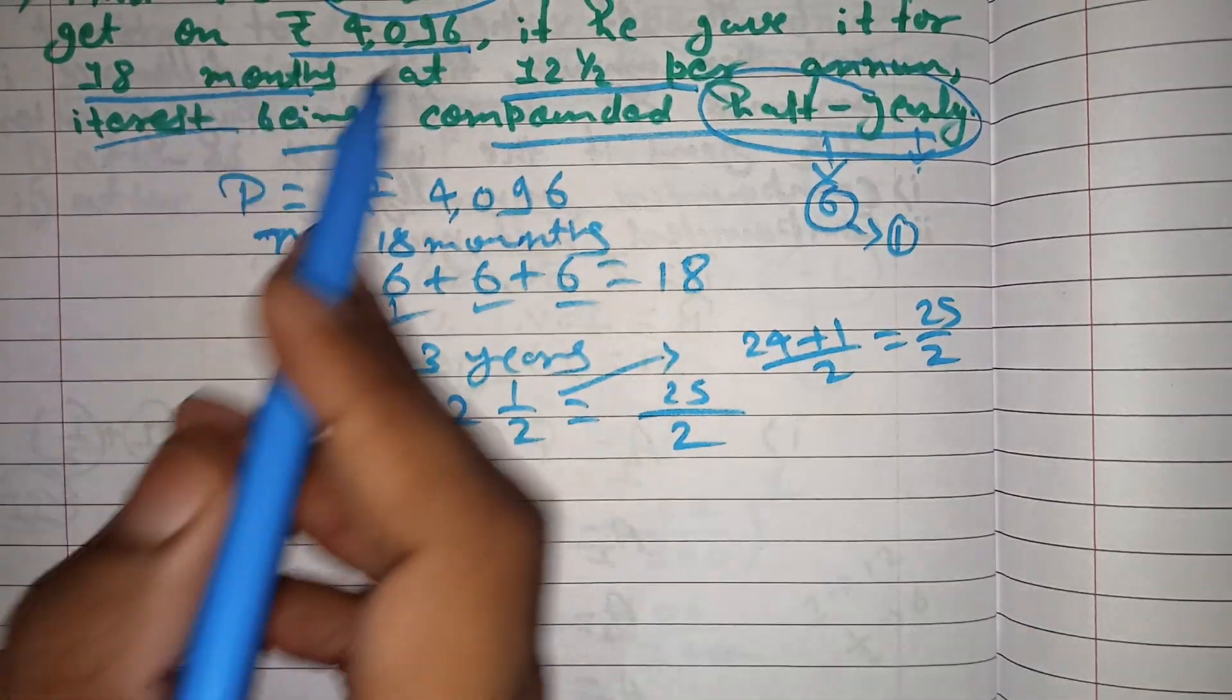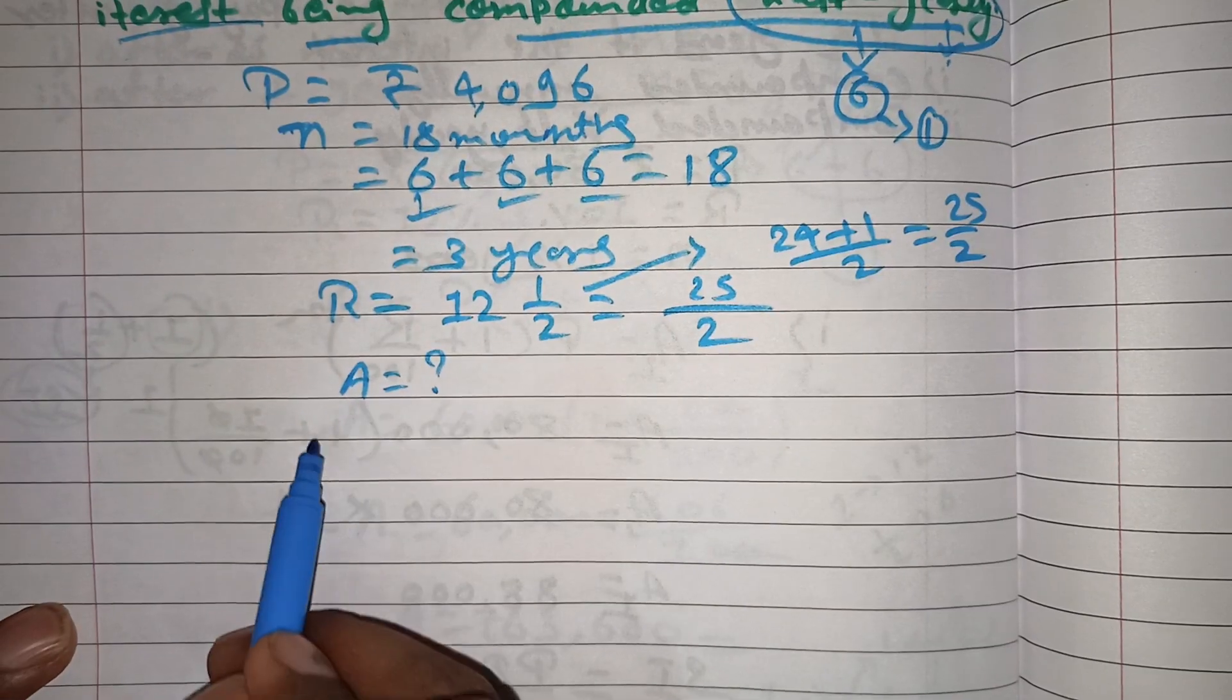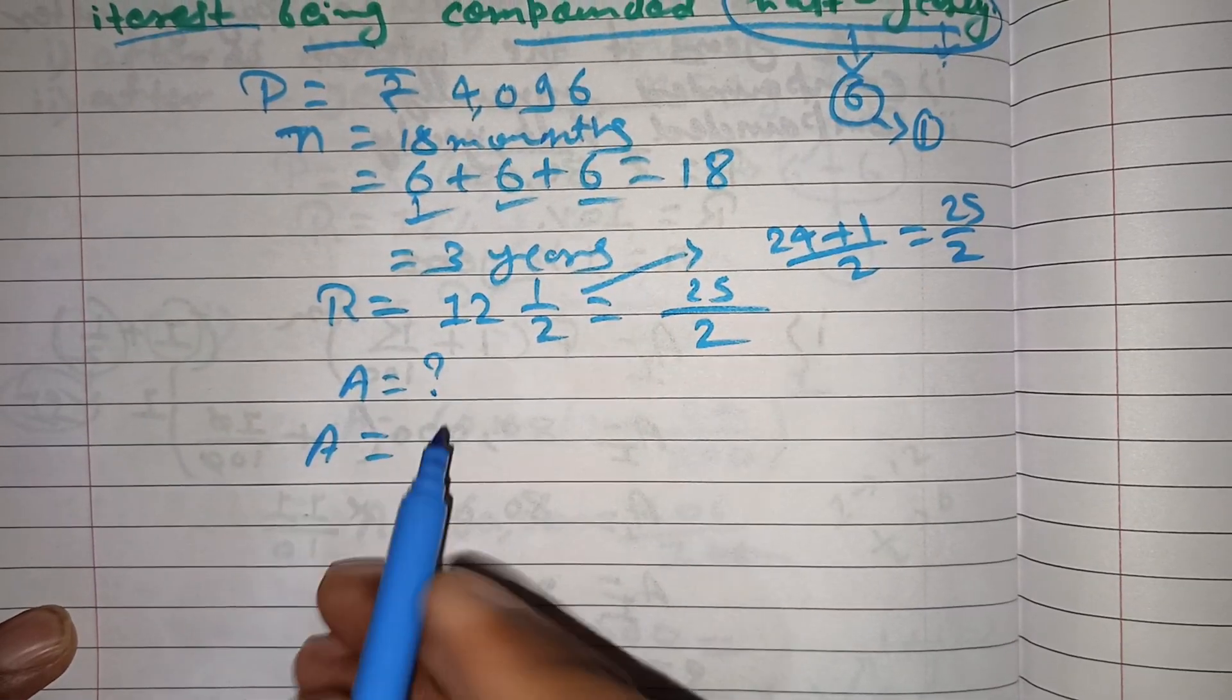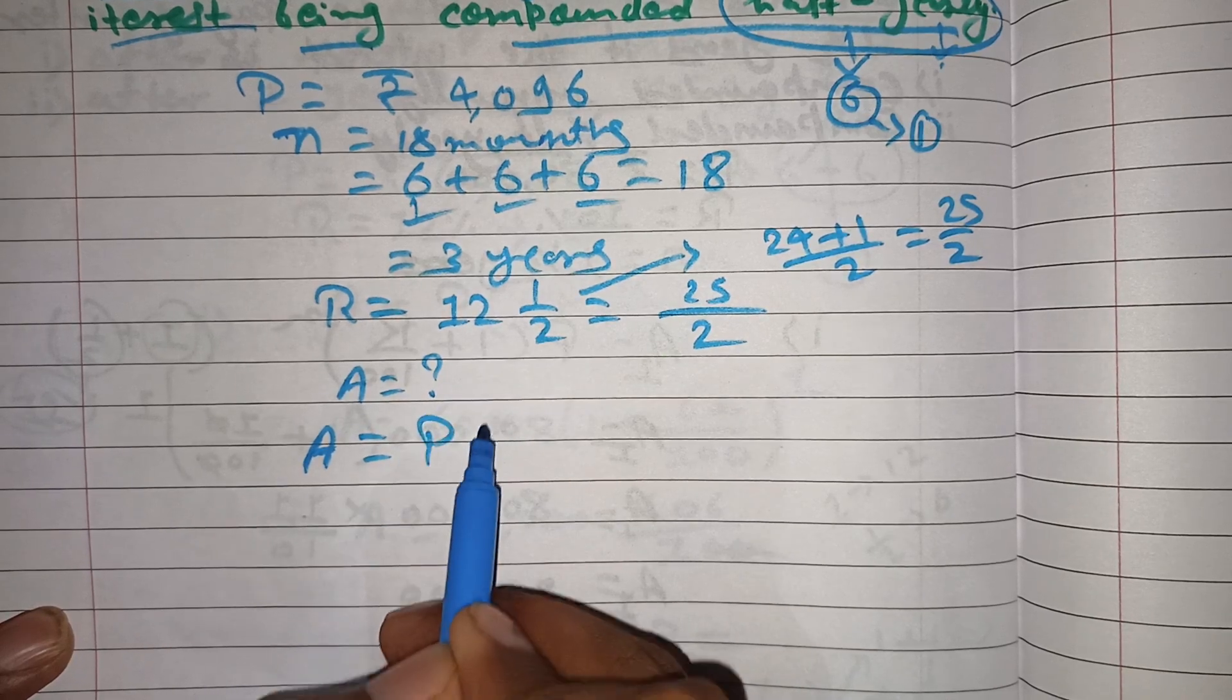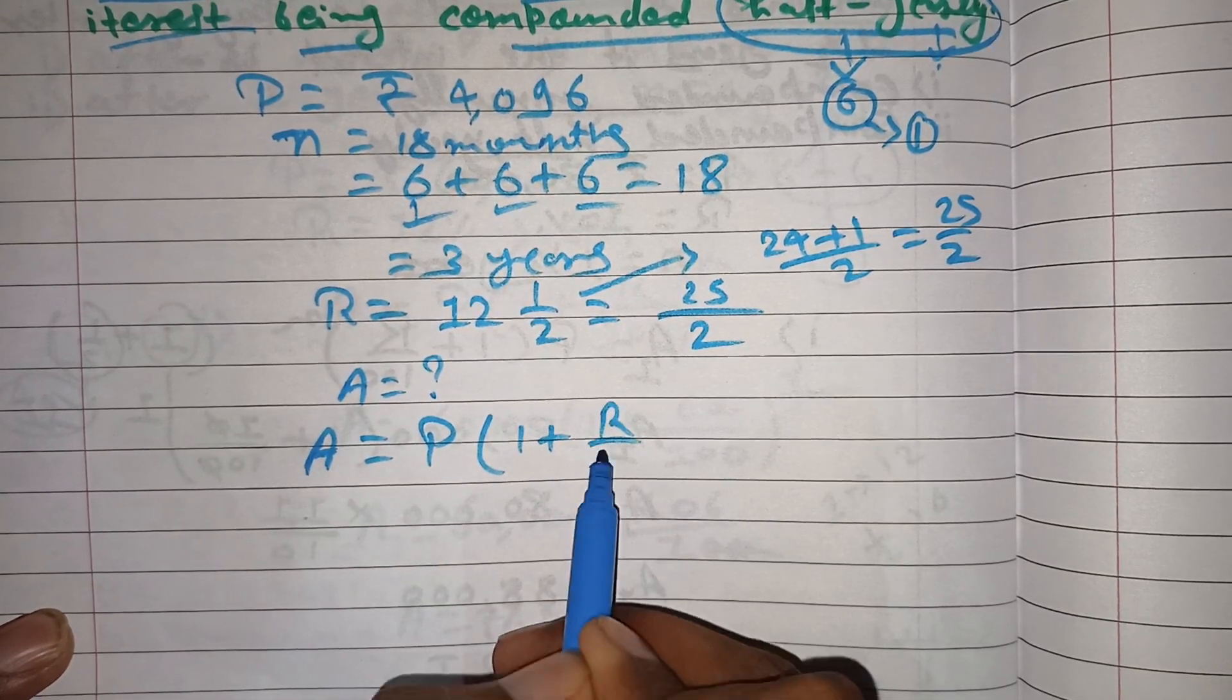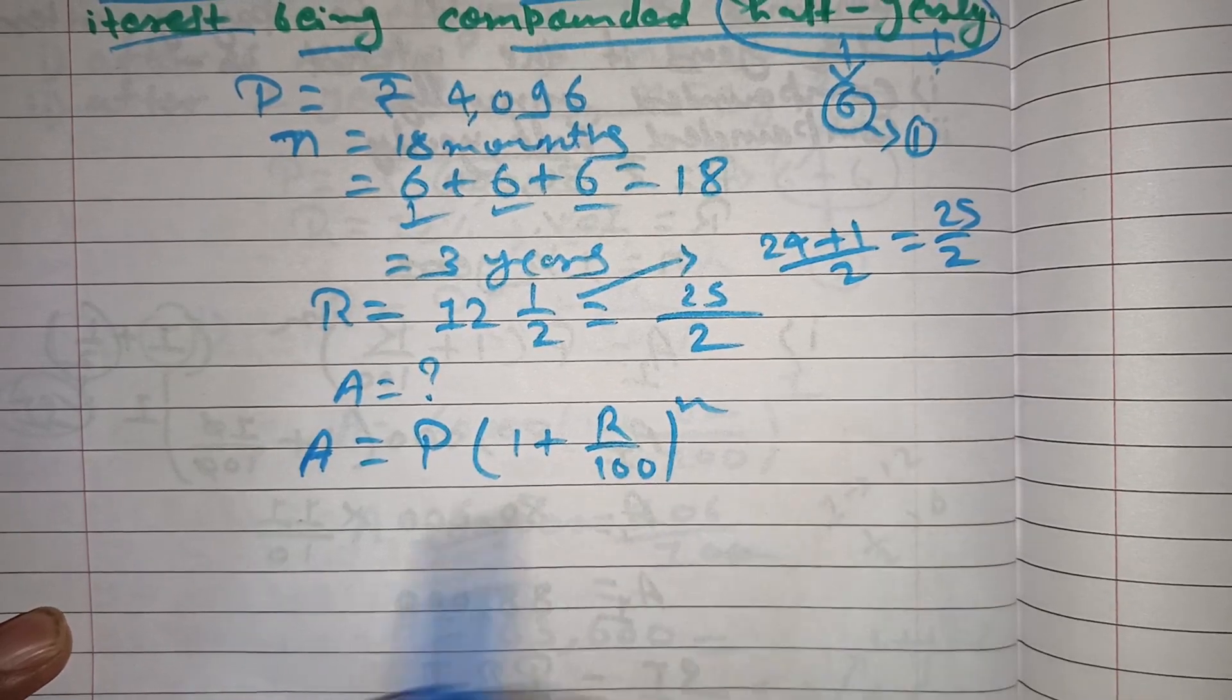We use the compound interest amount formula: A equals P times (1 plus r divided by 100) to the power n.